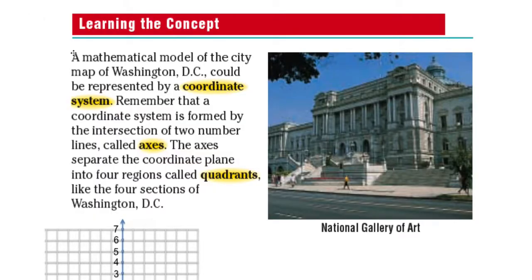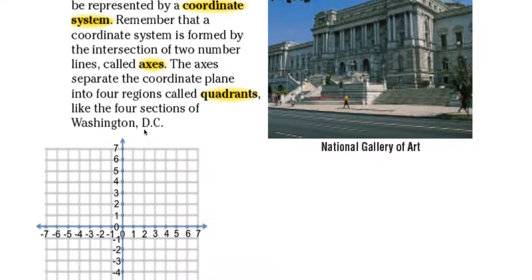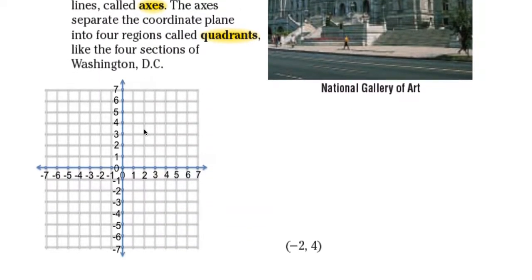In the same manner, in math, this can be represented by what we call a coordinate system. The coordinate system is formed by the intersection of two number lines called axes. Axes separate the coordinate plane into four regions called quadrants — like the four sections of Washington, D.C. In our coordinate system, just like Washington, we separate it into quadrants, and these are the four quadrants.